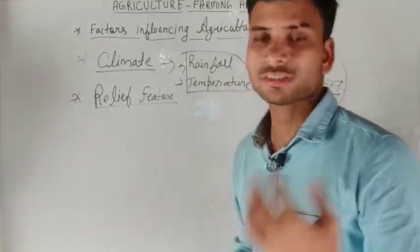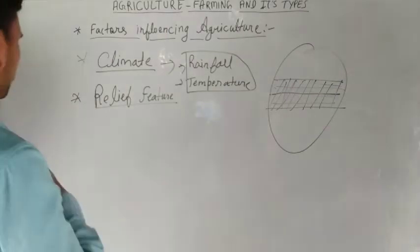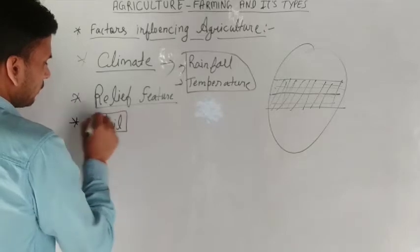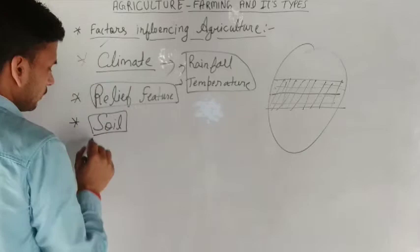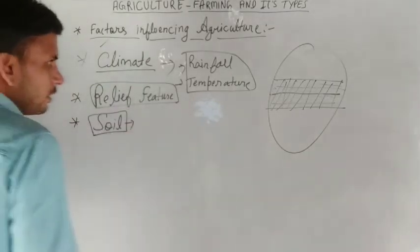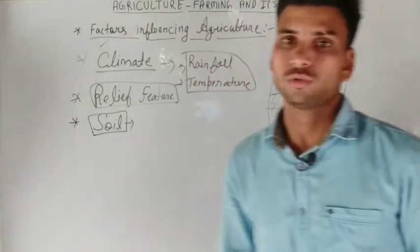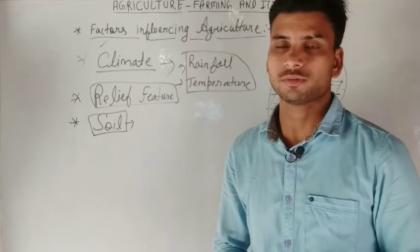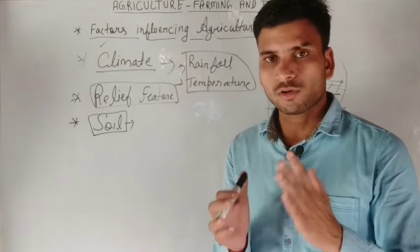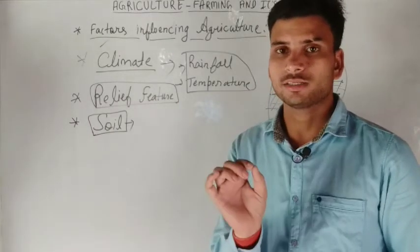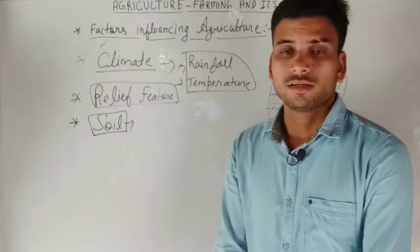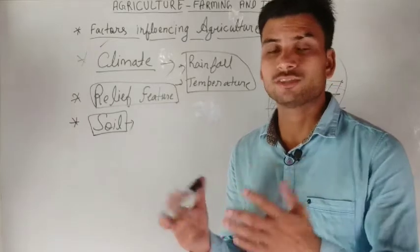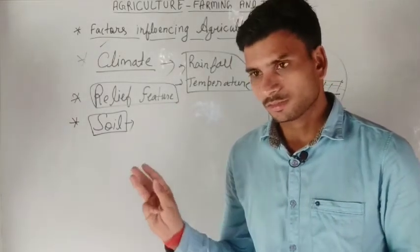The third factor is soil. Soil is a very important factor in agriculture. All crops cannot grow in all soils. For example, for cotton production, black soil is best suitable. For wheat and rice, alluvial and clay soil is best suitable.